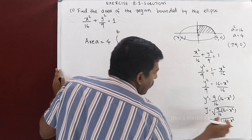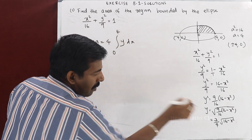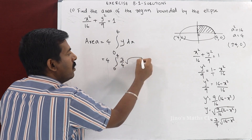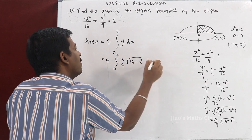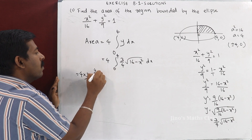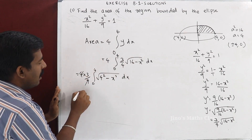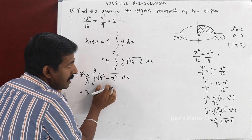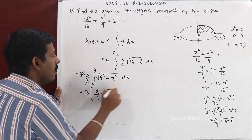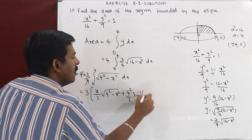So y in terms of x is y = (3/4)√(16 - x²). The area equals 4 times the integral from 0 to 4 of y dx, which is 4 × (3/4) × integral from 0 to 4 of √(16 - x²) dx. We use the formula: ∫√(a² - x²) dx = (x/2)√(a² - x²) + (a²/2) sin⁻¹(x/a).